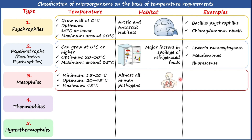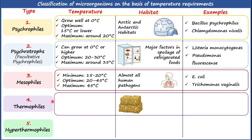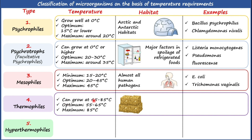E. coli and Trichomonas vaginalis are very good examples of mesophiles. The fourth type is thermophiles — heat-loving or high-temperature-loving microorganisms. Thermophiles can grow at 45 to 85°C.